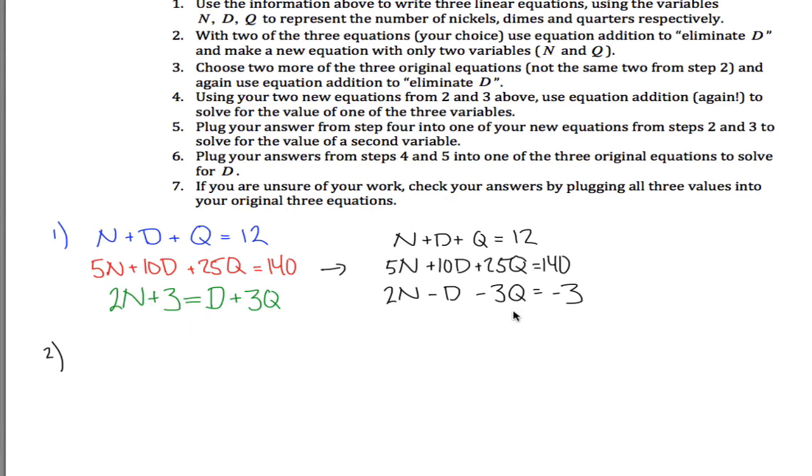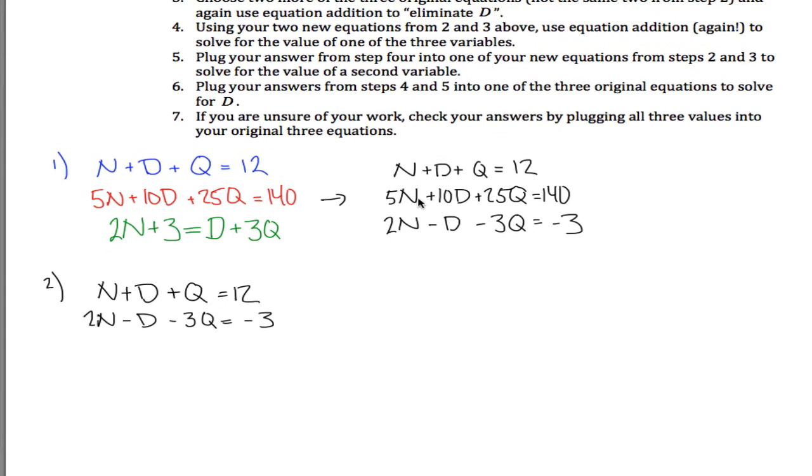So looking at these equations, there's a couple of options, I think it might be easiest to take the first equation and the third equation. So we can take the first equation and the third equation, and the reason I chose those, because those two are already set up so that if you add them, the D will be eliminated because we had plus D here and minus D here. So if I add these two equations together.